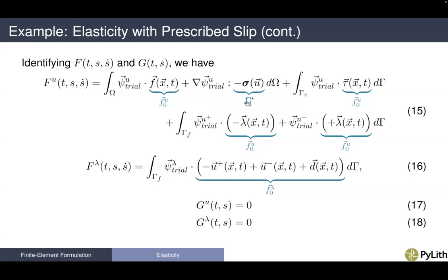PETSc implements and performs the integration of those functions dotted into the trial functions or double-contracted with the gradient in the trial function, and performs the integration and solve. In terms of implementing the physics, all we have to worry about are these kernels or pointwise functions used to implement the governing equation. The nice thing is these functions are very simple to construct: our body forces is just a vector of dimension at each point, our stresses are computed at point locations, we have our Lagrange multipliers which are part of the solution field, and we have our displacements as well as our slips.